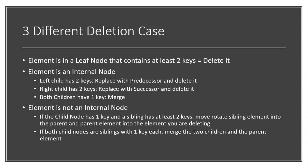In 234Trees, there are around three different cases when it comes to dealing with them, some with subparts though. If an element in a node that is a leaf node contains at least two keys, simply remove the element from that node.